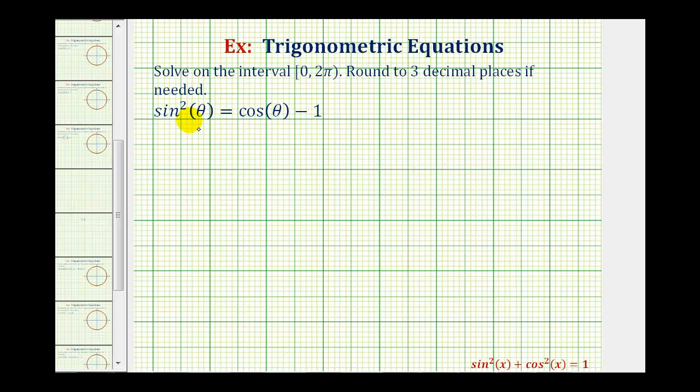We want to solve the trig equation sine squared theta equals cosine theta minus one on the given interval. Notice how this interval includes zero, but does not include two pi.